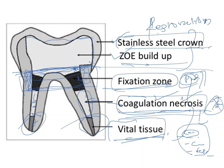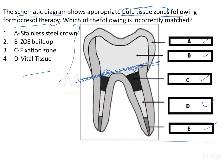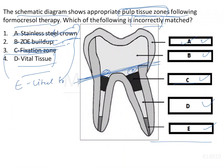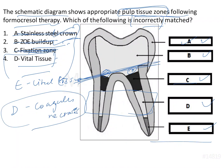Coming back to the question: option A is stainless steel crown — correct. Option B is zinc oxide buildup — correct. Option C is fixation zone — correct. Option E is vital tissue — correct. Option D, however, is labeled as vital tissue in the question but that area is actually the coagulative necrosis zone. Therefore, option D is incorrectly matched, making D the answer.